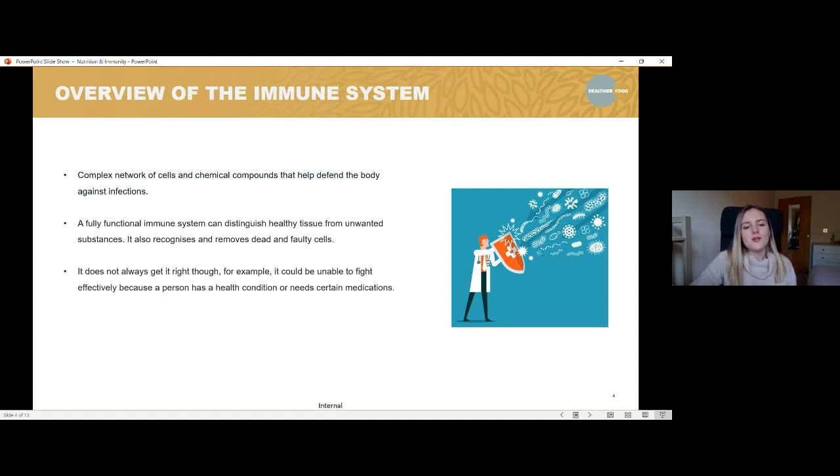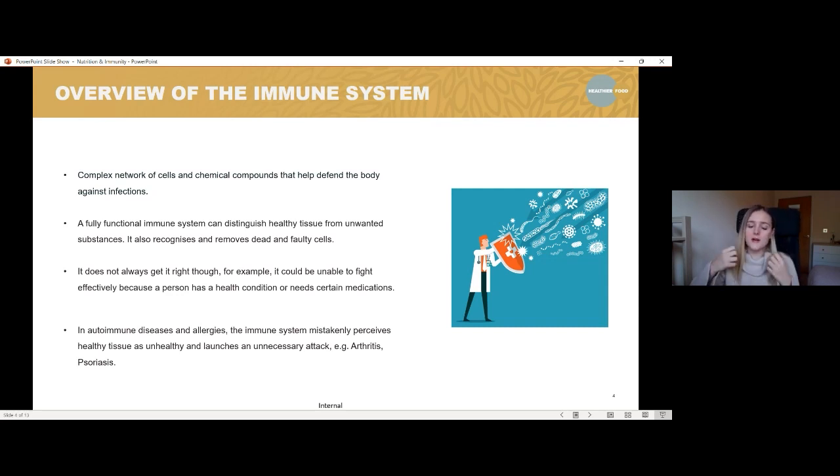But sometimes, unfortunately, it doesn't always get it right. So, for example, if a person has a certain health condition or maybe is taking certain medications, it can impact how the immune system works. So it's not always on tip-top form, unfortunately. Some examples of these would be things like autoimmune diseases and allergies. Sometimes the immune system might mistake something which is healthy tissue as unhealthy, for example, and launch an attack. Some examples of those would be arthritis or psoriasis, a skin condition where the body starts to attack itself.